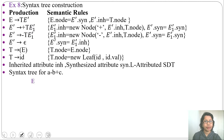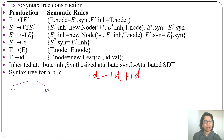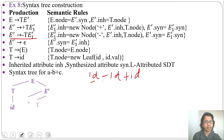We will derive a minus b plus c — that is, id minus id plus id — from this grammar, then evaluate the semantic rules. From E we derive T E'. Doing leftmost derivation, from T I derive id. Next I need to derive minus id plus id, so from E' I choose the production E' derives minus T E1'. Then from T I derive id — now I have id minus id.